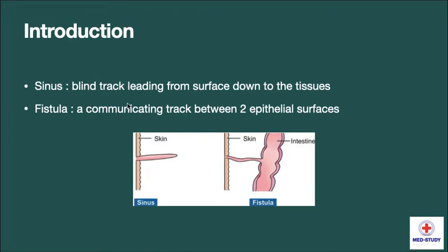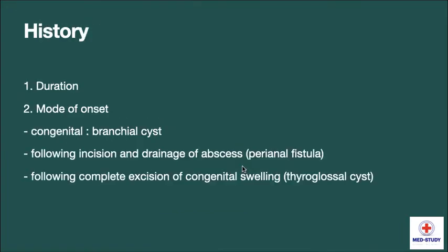First of all, sinus is a blind track leading from the surface down to the tissues, while fistula is a communicating track between two epithelial surfaces. Here it shows the sinus which has a blind track, while the fistula connects two epithelial surfaces.